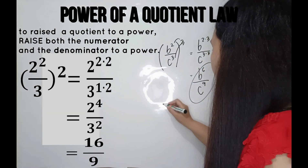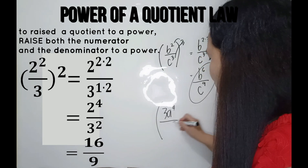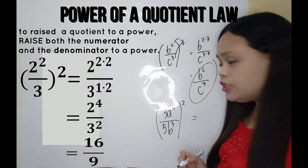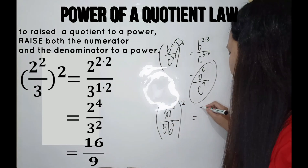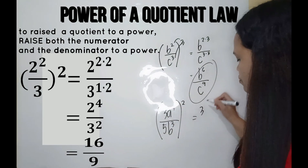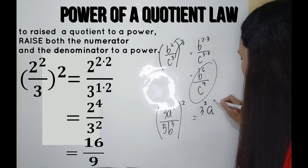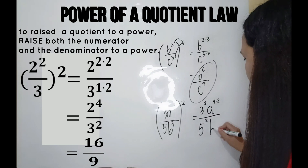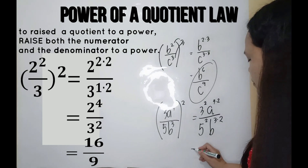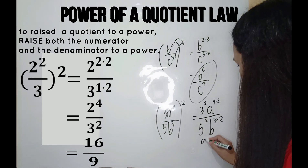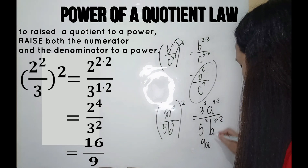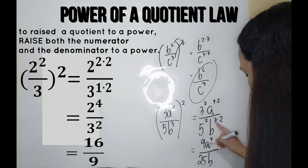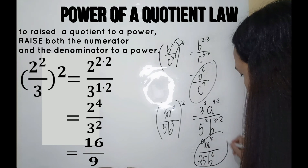Another example: the quantity of 3a raised to 4 over 5b raised to 3, raised to 2. Dito, kailangan bawat term naka-raise yan kay 2. So it gives you 3 — let's say may 1 yan — so 1 times 2, that's 2. And then a to the power of 4 times 2, over 5 raised to 2, and then b raised to 3 times 2. Simplifying: 3 squared is 9, a to the power of 4 times 2 is 8, 5 squared is 25, and b raised to 3 times 2 is 6. So our final answer is 9a to the power of 8 over 25b to the power of 6.